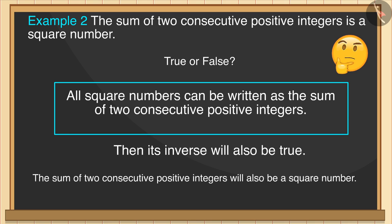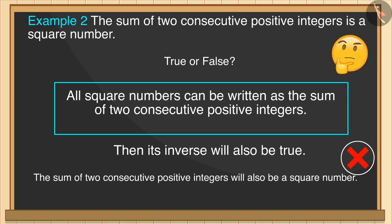That is, the sum of two consecutive positive integers will also be a square number. This is a misconception. The sum of two consecutive numbers is not always a square number.